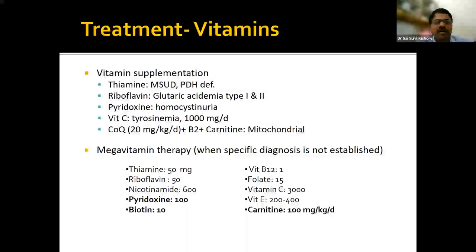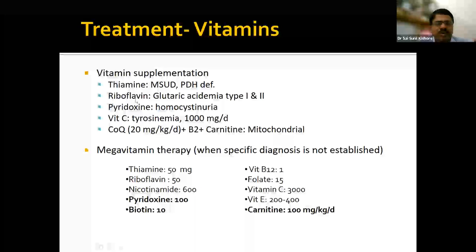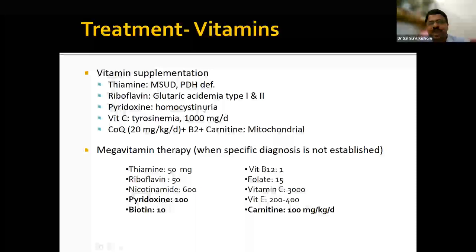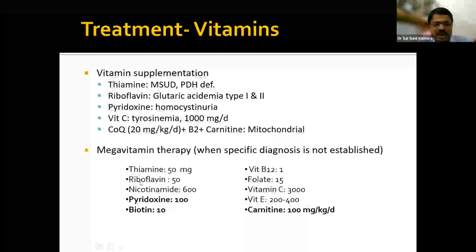The role of vitamins in inborn errors: thiamine is useful for MSUD and PDH deficiency; riboflavin for glutaric acidemias; pyridoxine for homocystinuria; vitamin C for tyrosinemia. For mitochondrial disorders, give mitochondrial cocktail comprising CoQ10, riboflavin at higher doses, carnitine, and vitamin E. When the diagnosis is unknown, give a metabolic cocktail — mega-vitamin therapy — containing thiamine, riboflavin, B3, pyridoxine, and biotin at higher doses. These help tide over the crisis and save the baby before the final diagnosis is reached.